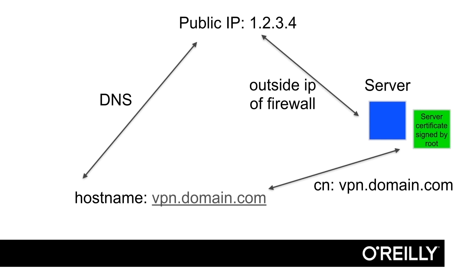So the client should use, in this example, vpn.domain.com in the host field of AnyConnect to connect to the firewall. That DNS name should resolve to IP address 1.2.3.4, and 1.2.3.4 should be the outside IP address of the firewall. The certificate has one field called common name, CN. The common name is the name field of the certificate, and that common name field must be the same as the hostname.